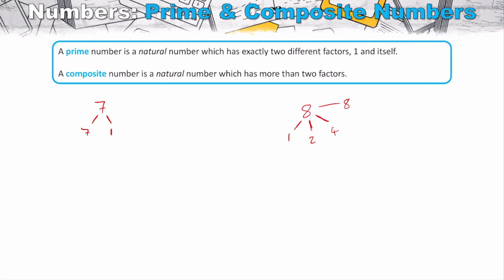Looking at all natural numbers, we can identify which are prime and which are composite. Listing the primes: two can only be divided by itself and one; three fits that category; four doesn't because it can also be divided by two; five does; six doesn't; seven does; eight, nine, and ten don't; but eleven does. We could keep going.